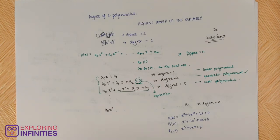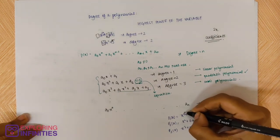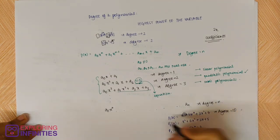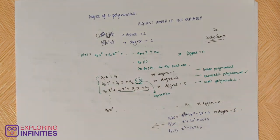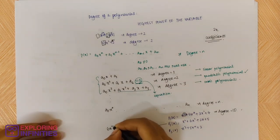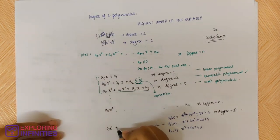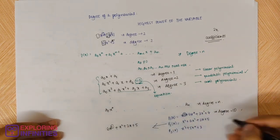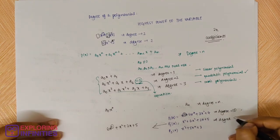One good approach is to write the terms from highest to lowest power in descending order so it's easy to see the degree. So P2 rewritten becomes 6x⁷ + x² + 2x + 5 — here the degree will be 7. And for P3, rewritten as 5x⁴ + x³ + 3, we can see the highest power is 4, so the degree will be 4.